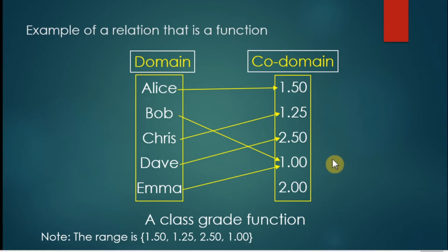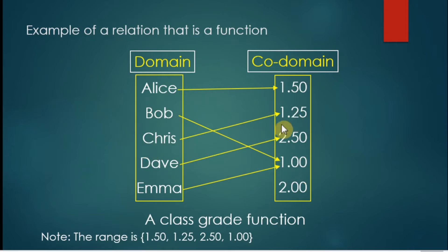Here is an example of a relation that is a function. Let us verify by checking the two conditions. First, all elements of the domain must have a pair — all five of them have a pair in our codomain. Second, each element is paired with only one element: Alice is paired with only one number, Bob with only one, Chris with only one, and the same for Dave and Emma. So this mapping is a function. The range is the set containing only four numbers, since only four elements of the codomain have a pair from the domain.